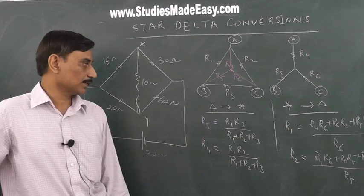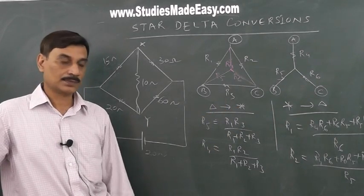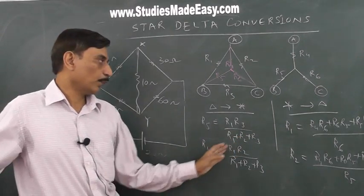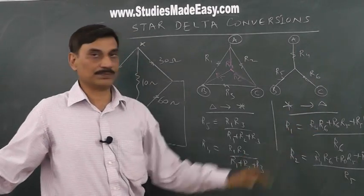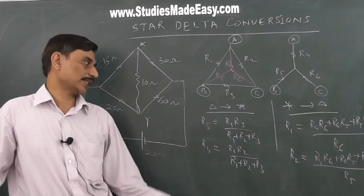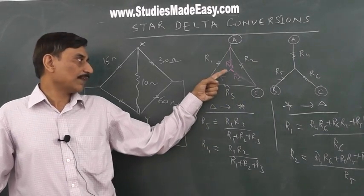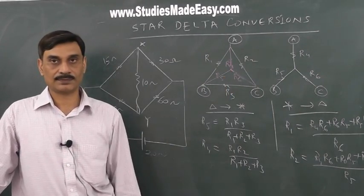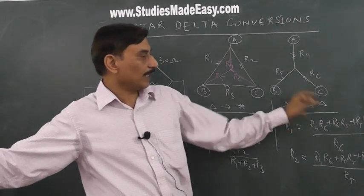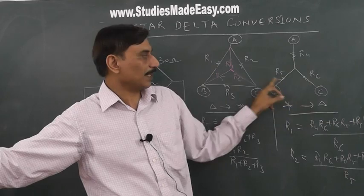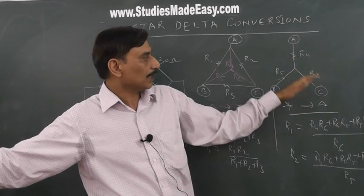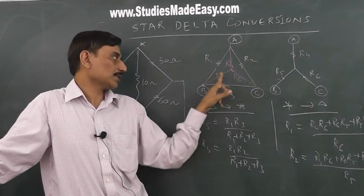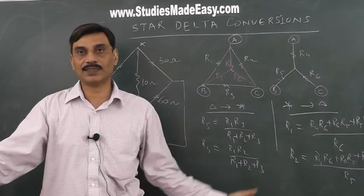The key thing to note is: when going from delta to star, the denominator remains the same — R1 plus R2 plus R3. When going from star to delta, the numerator remains the same. For delta to star: multiply the two adjacent resistors and divide by their sum. For star to delta: complete the circle, add all pairwise products, and divide by the opposite resistor. Opposite to R1 is R6, opposite to R2 is R5, opposite to R3 is R4.